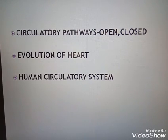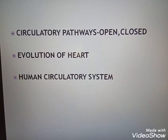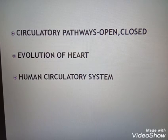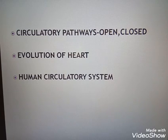This is the evolution of the heart. Fish have two chambers of the heart. Amphibians have three chambers — one atrium and one ventricle on one side. Each organism's heart evolved in structure and function.